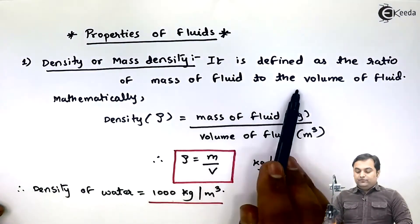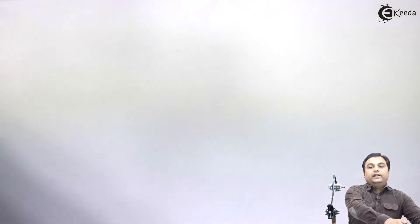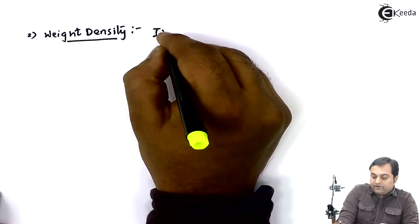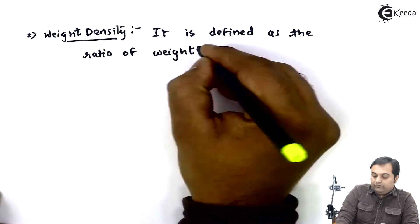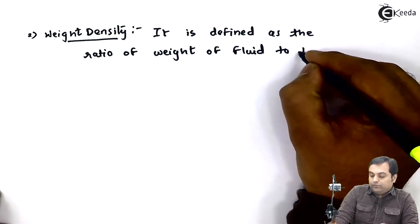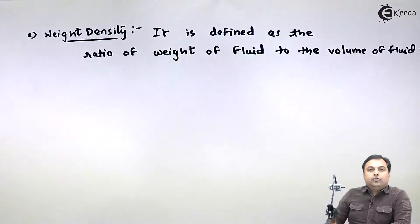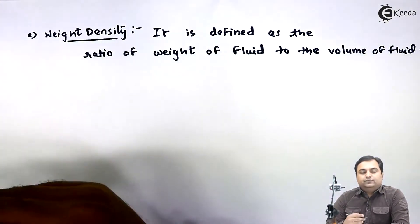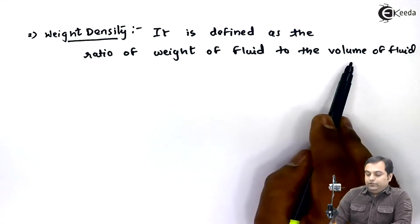The next property is called weight density. It is defined as the ratio of weight of fluid to the volume of fluid. In mass density it was mass upon volume; here we have the ratio of weight of fluid to the volume of fluid.